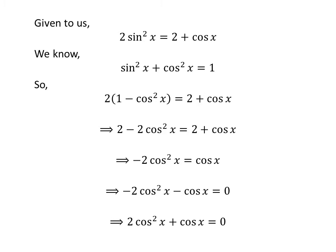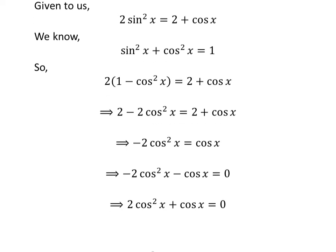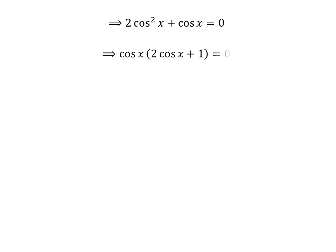Multiplying the whole expression by minus 1 gives us 2 times cosine squared of x plus cosine of x is equal to 0. Taking out the common factor cosine of x gives us cosine of x times (2 times cosine of x plus 1) is equal to 0.